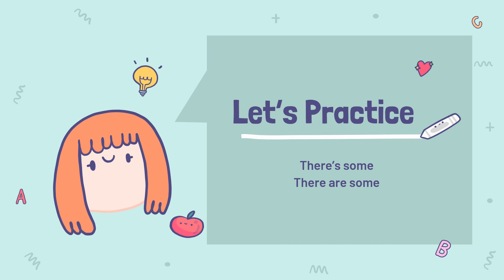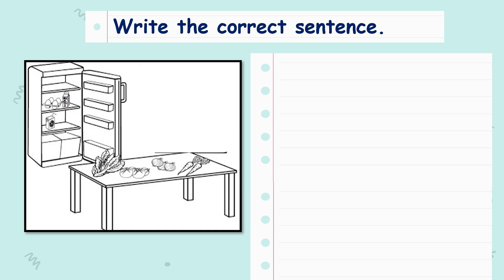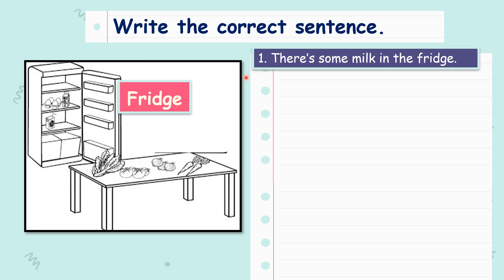Next, let's try some simple practices using there are some and there is some. Write the correct sentence. We will start off from this picture. In this picture, we can see there are some food items in the fridge and there are some vegetables on the table. We will start off with everything in the fridge. Let's make a sentence. Number one: there is some milk in the fridge.